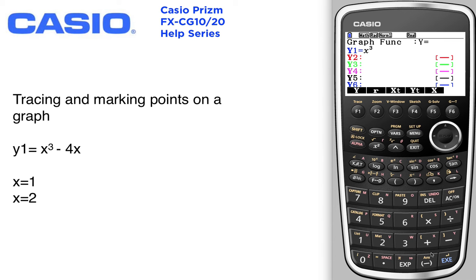Make sure you toggle out, minus 4x. Press execute to enter that in. Go ahead and hit draw.